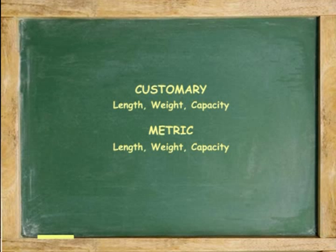We cover three types of units: length, weight, and capacity. Because three types of units are covered using two systems, in reality we are covering six units: customary length, weight, and capacity, and metric length, weight, and capacity.